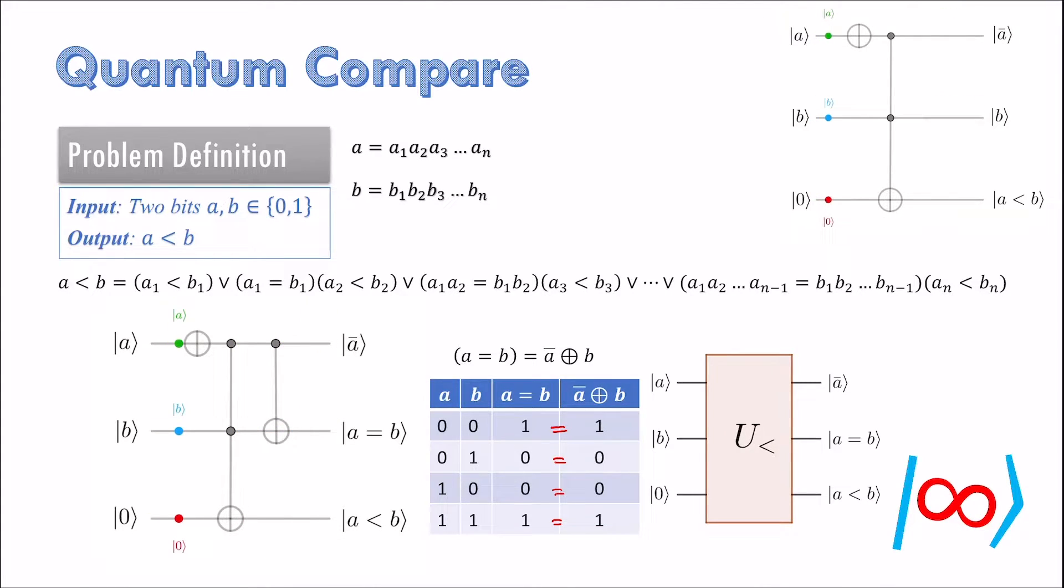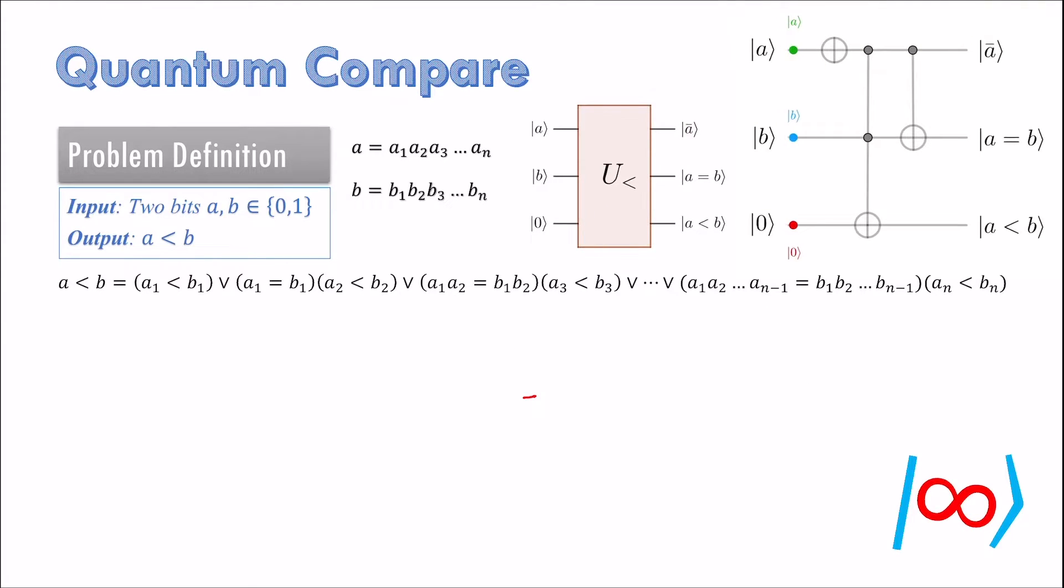We need another ingredient for the final circuit. Notice that in the above expression, the less than term is never repeated. To save space, we reset this qubit to 0 using the following circuit. This circuit is based on the following expression which we verify now.